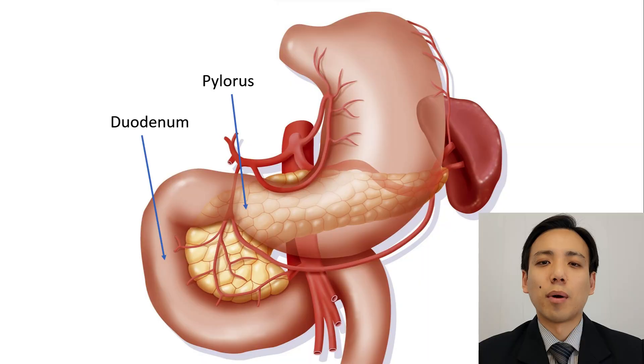Gastric outlet obstruction, often shortened to GOO, is the obstruction of the stomach, typically at the level of the gastric pylorus or the duodenum, which are the narrowest points at the end of the stomach.